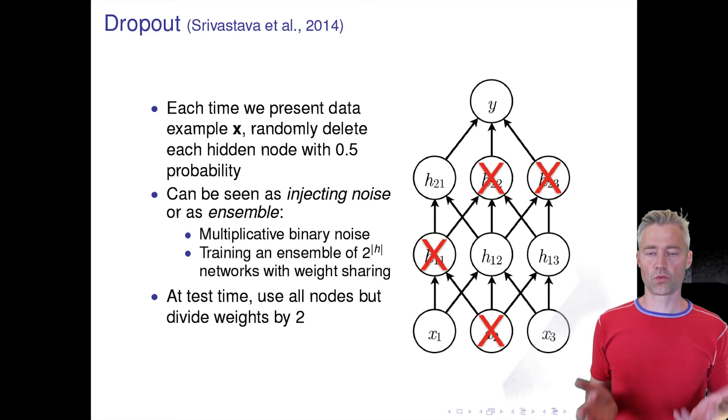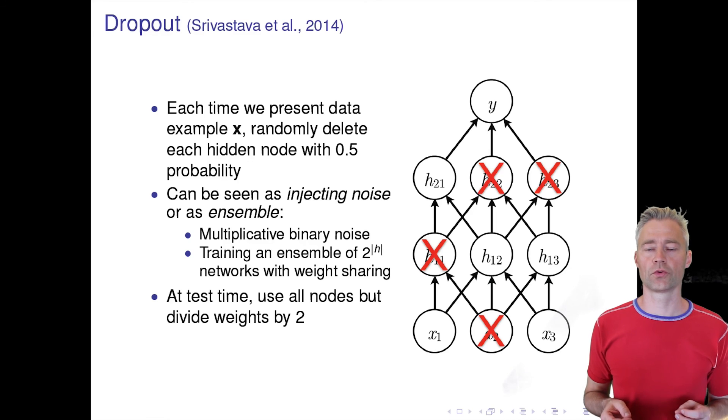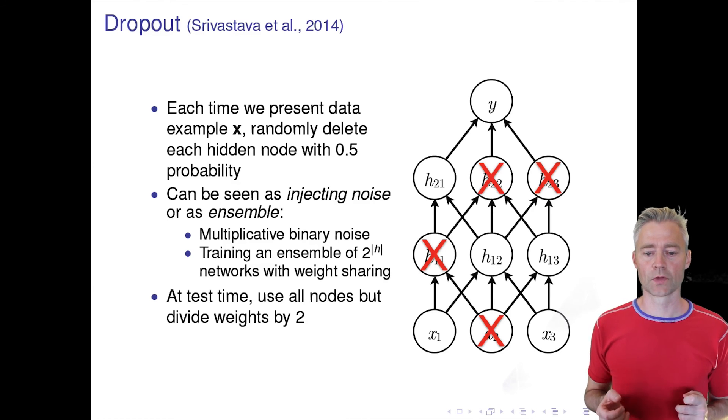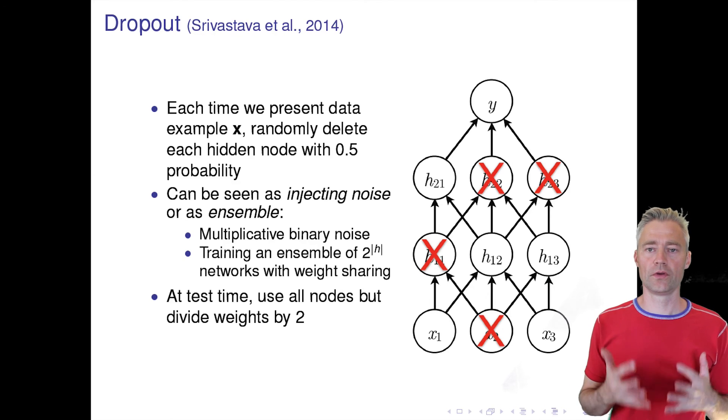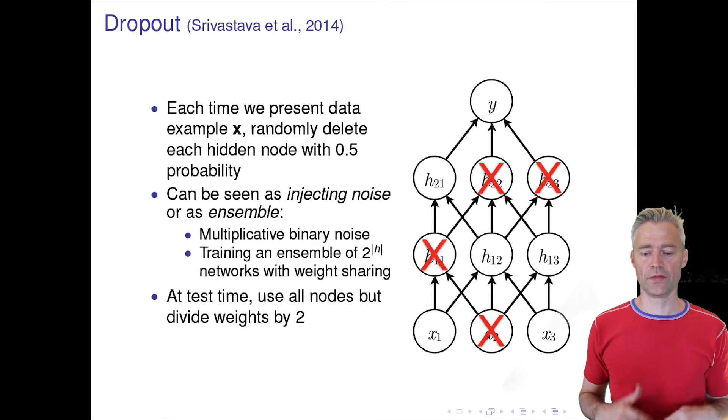Dropout is a quite new technique—it's only three or four years old—and it has really helped improve the performance of many of these classical benchmarks. The idea is very simple, embarrassingly simple. The idea is that we remove hidden units at random. So we present an example, an input, and this example comes also with a mask where we mask out some of the hidden units. In this example you can see we masked out four of the hidden units and then we get an output from this network.